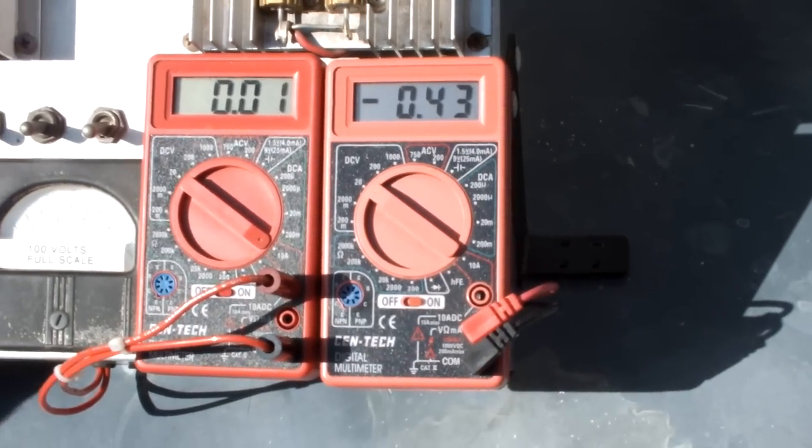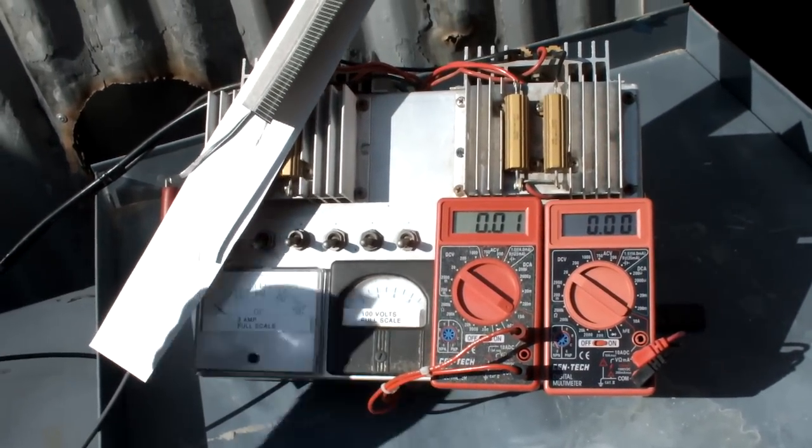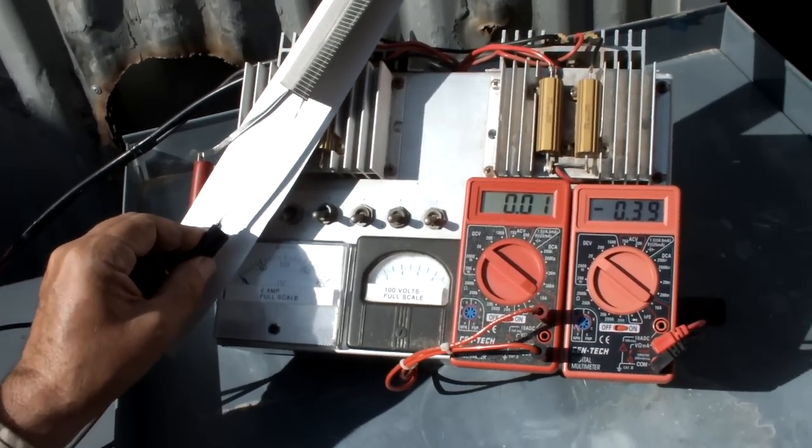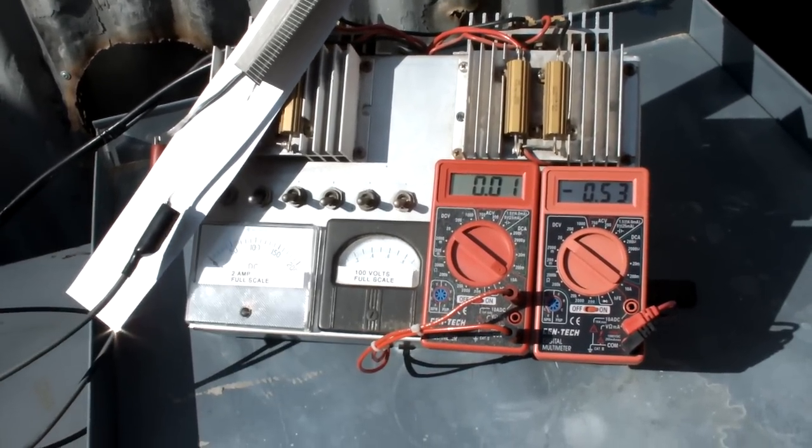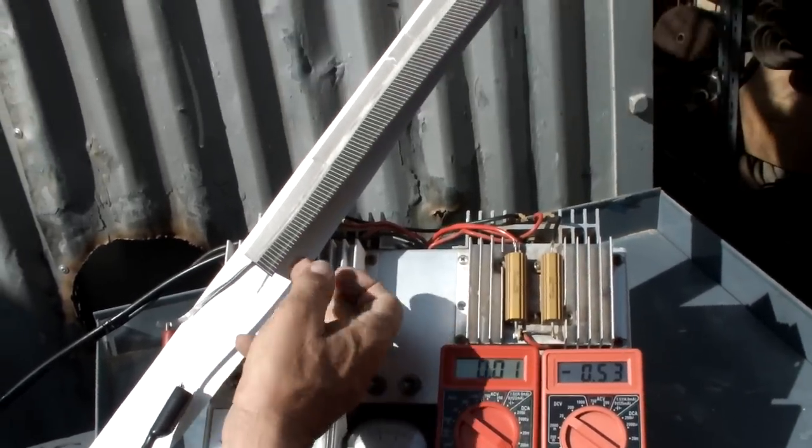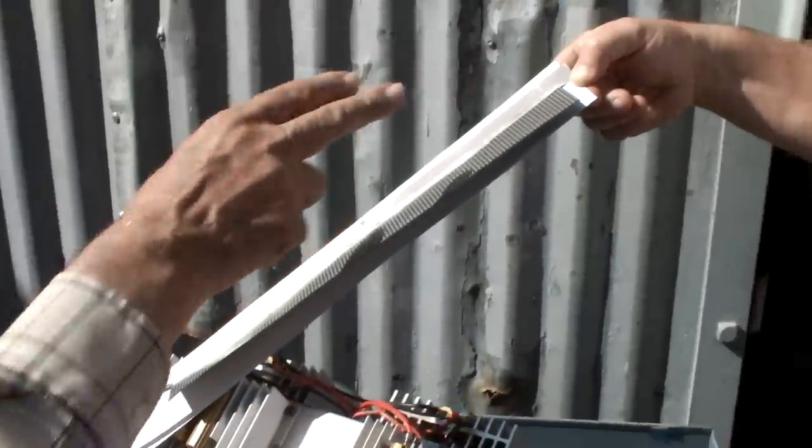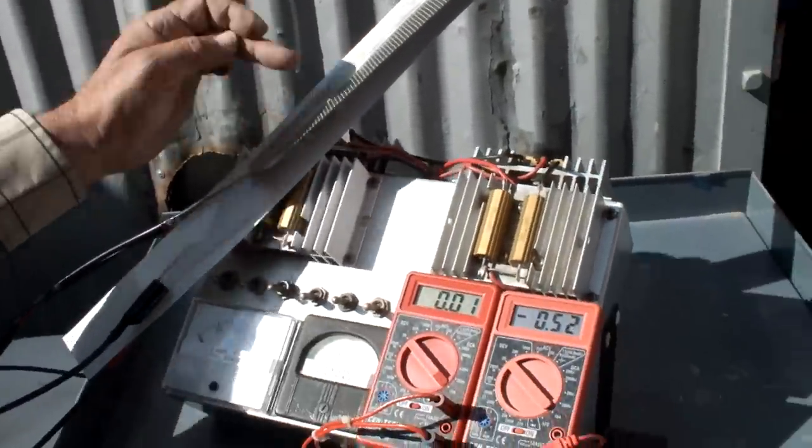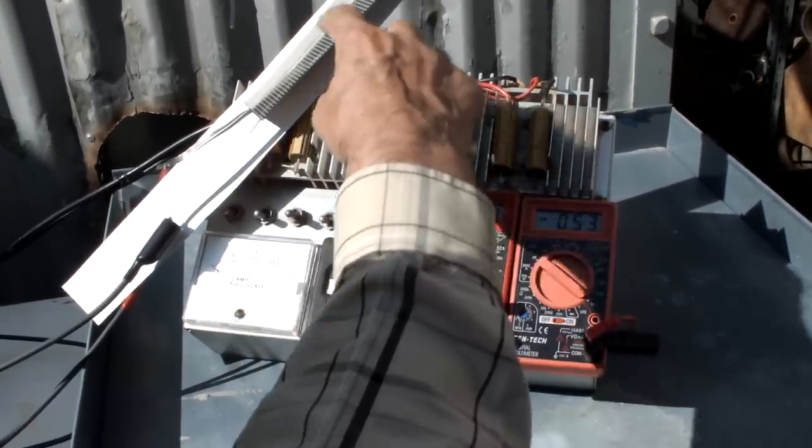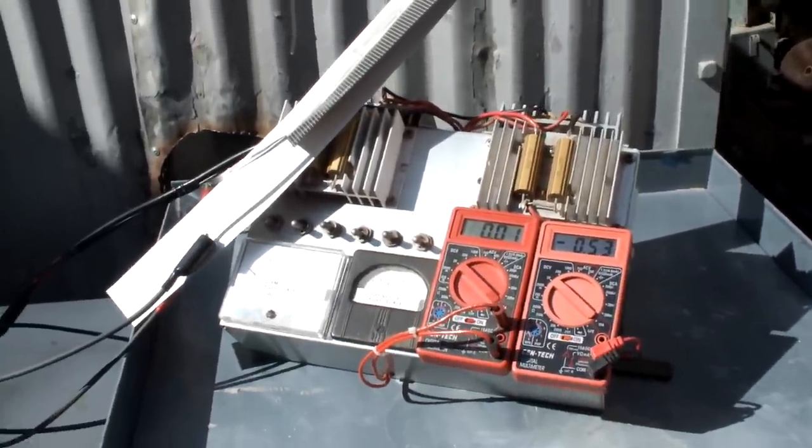So you can see that when we disconnect it, it goes to zero because we're not getting anything from the panel. This is how you can test the individual cells by hooking up the wire, in this case a tab, to the back, and another tab to the front along the little strip that has all these little fingers on it that collect the electricity from the whole cell. Great. Thanks a lot, Ron. Okay. Good job. That's it.